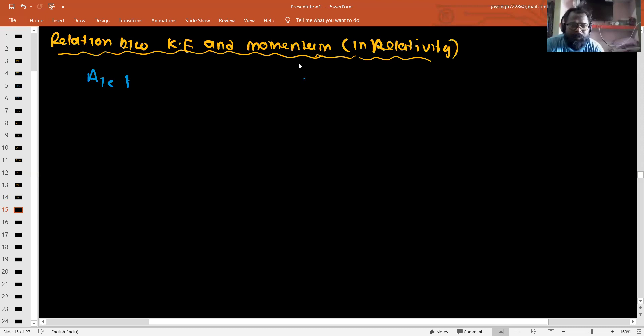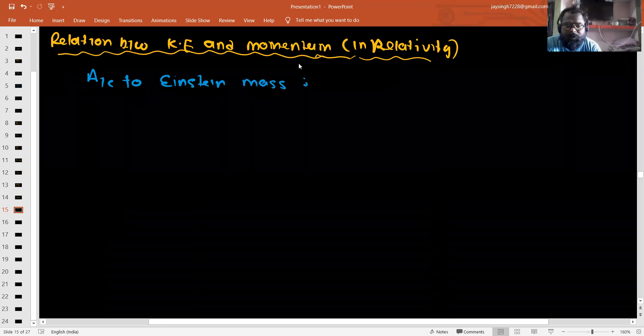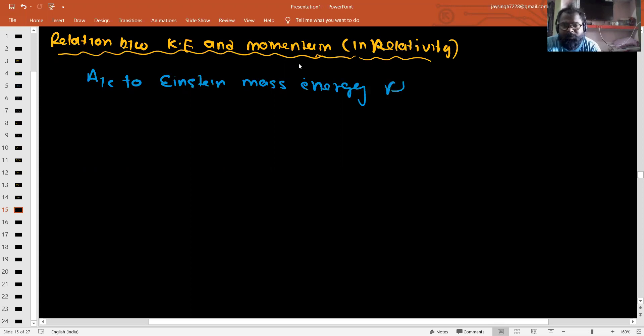According to Einstein's mass energy relation, E equals m₀c² plus K.